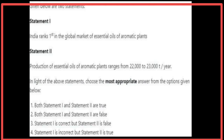Given below are two statements. Statement 1: India ranks first in the global market of essential oils of aromatic plants — Statement 1 is correct. Statement 2: Production of essential oils of aromatic plants ranges from 22,000 to 23,000 tons per year — Statement 2 is true. The most appropriate answer is Statement 1 and Statement 2 are true.